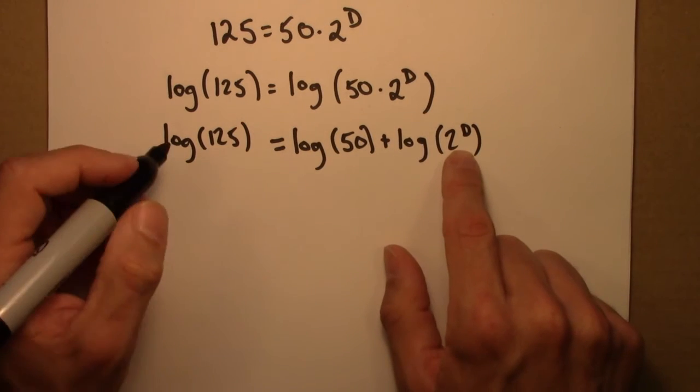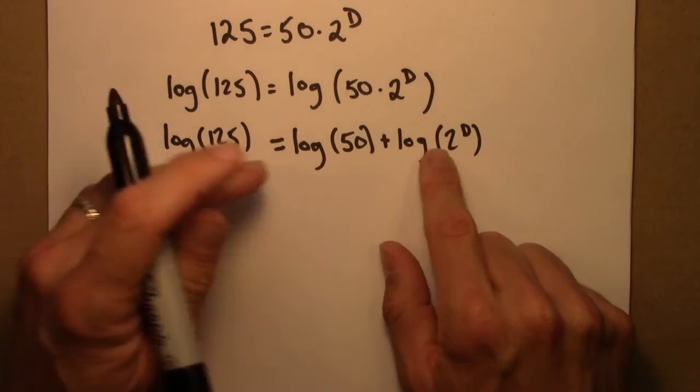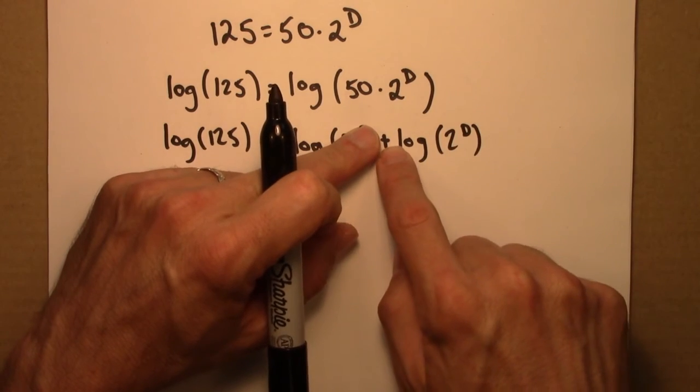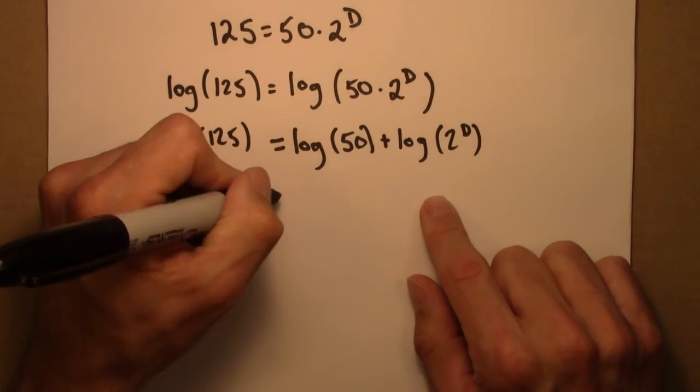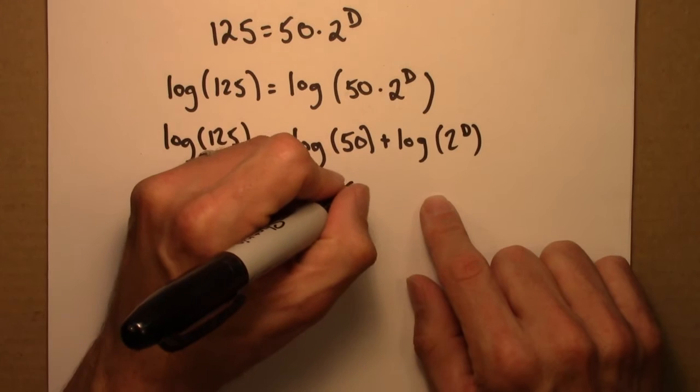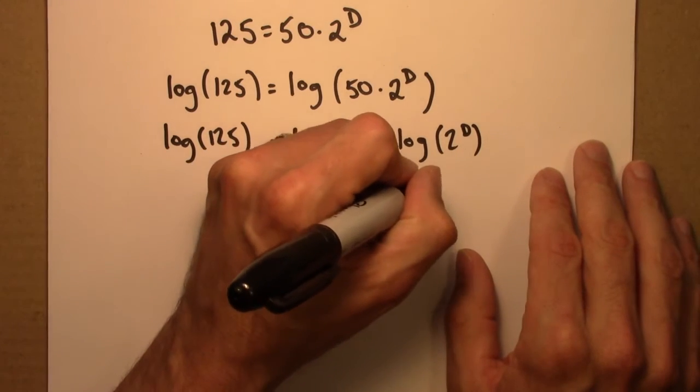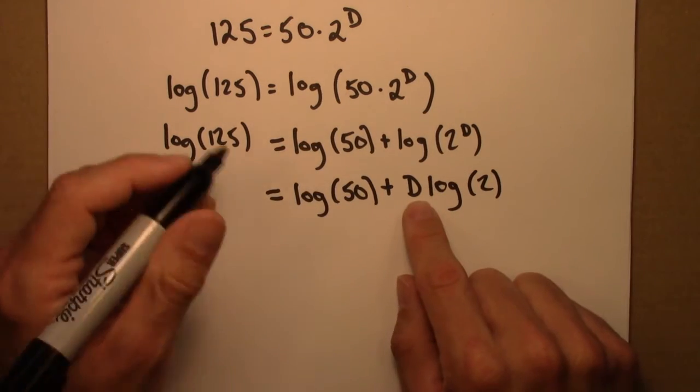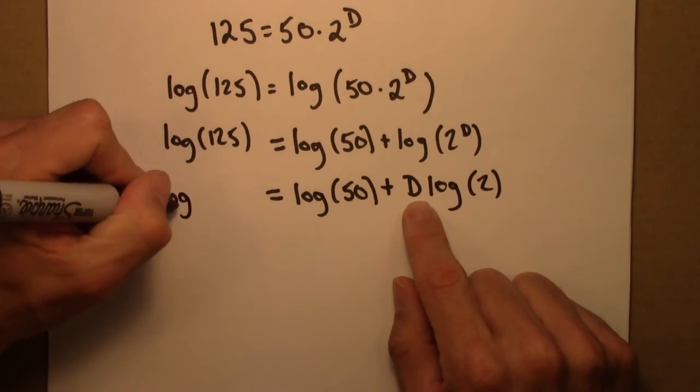Then I can use the exponent property here, because I've got 2 to the d. So I can take the d downstairs and outside. So this will become log 50 plus d log 2. And now I need to solve for d.